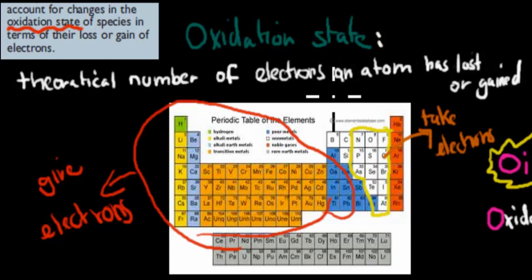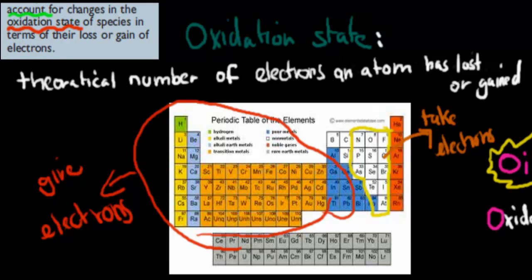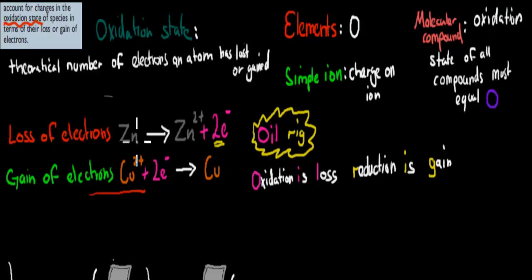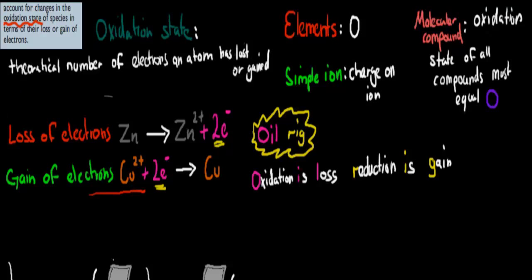We have to account for the changes in the oxidation state — the verb is account, so we have to explain why this happens. Right here we have the reaction covered in the last couple of videos, where we have a loss of electrons from zinc. The zinc goes from the element zinc to a zinc ion, so it has lost two electrons. On the other side, we have a gain of electrons for copper — copper has taken those two electrons from zinc and gained them by becoming copper in its elemental state.